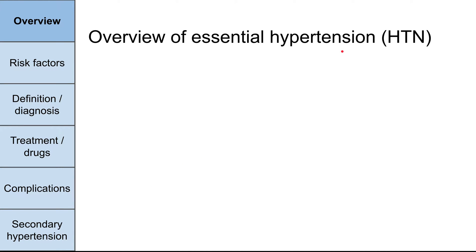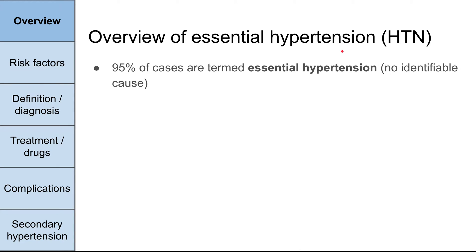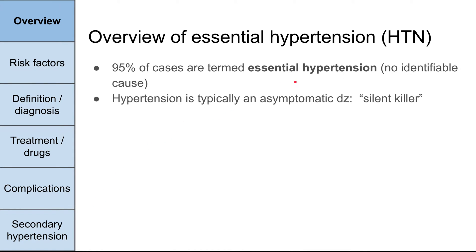For an overview: 95% of cases are termed essential hypertension, which means that there's no single identifiable cause. It's usually a combination of metabolic syndrome and diet and exercise, and it creates the vascular problems. The non-essential hypertension would be called secondary hypertension. Hypertension is typically called a silent killer — it's an asymptomatic disease with some pretty serious complications. While patients have it, it's something they don't notice, so it's called a silent killer.